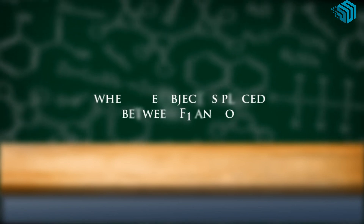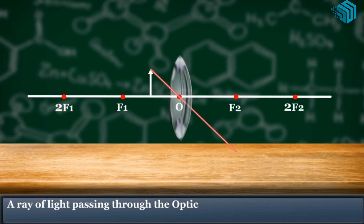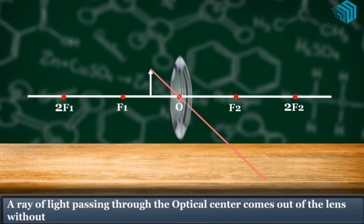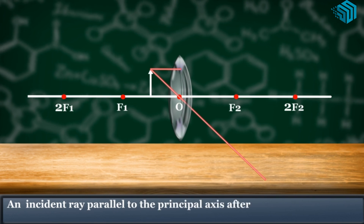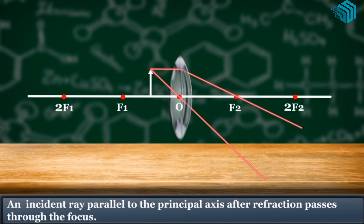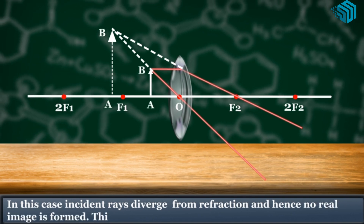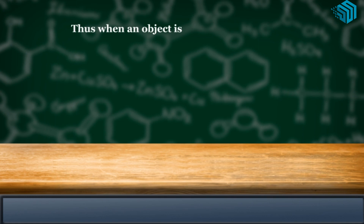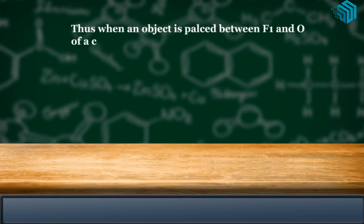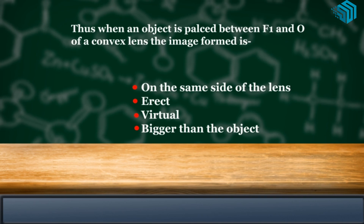When the object is placed between F1 and O: a ray passes through the optical center without any deviation, and a ray parallel to the principal axis after refraction passes through the focus. The incident rays diverge after refraction and hence no real image is formed — the image is therefore virtual. When an object is placed between F1 and O of a convex lens, the image formed is on the same side of the lens, virtual, erect, and bigger than the object.